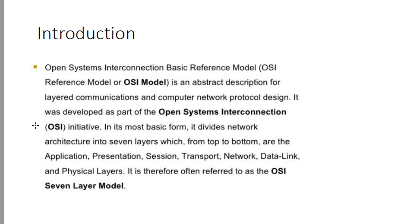It divides network architecture into 7 layers from top to bottom: Application, Presentation, Session, Transport, Network, Data Link, and Physical layer. Therefore it is called the OSI 7-layer model. This model was developed by Open System Interconnection, that's why it is called the OSI model.